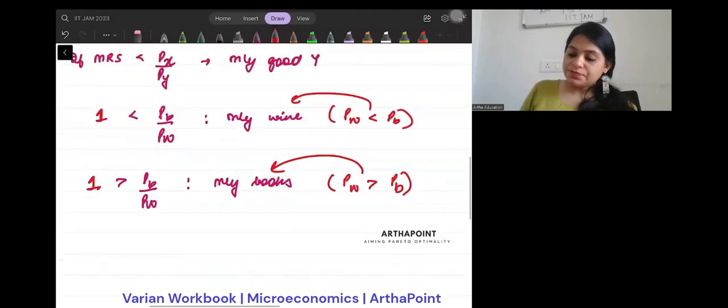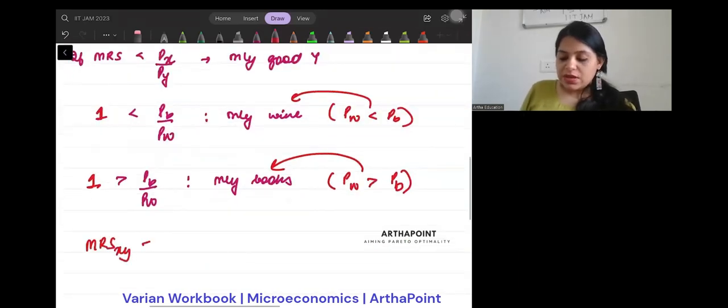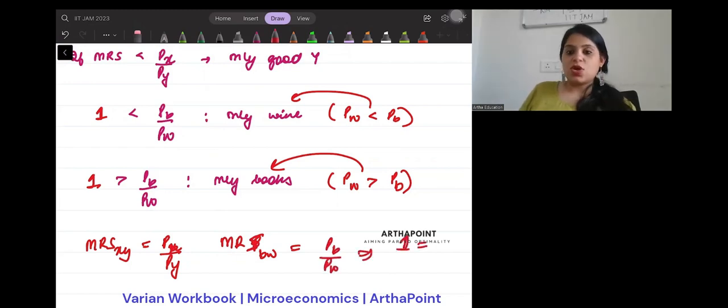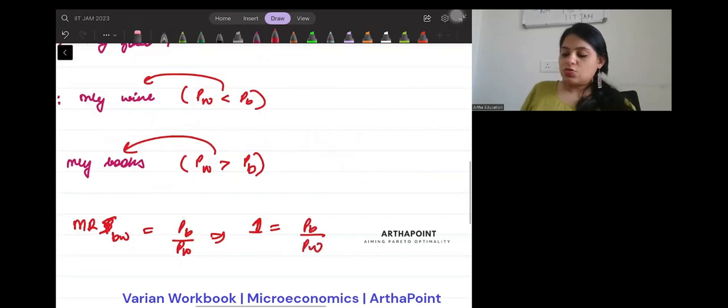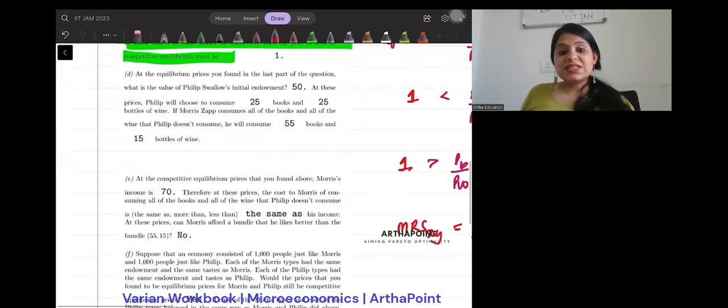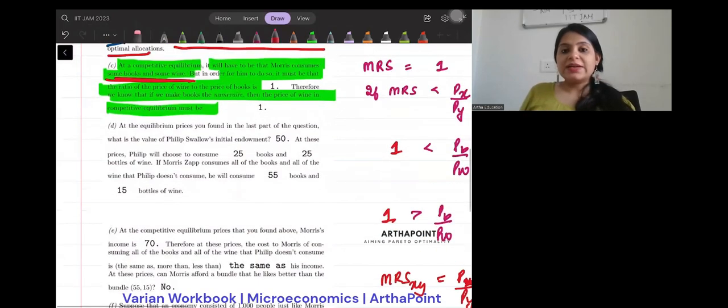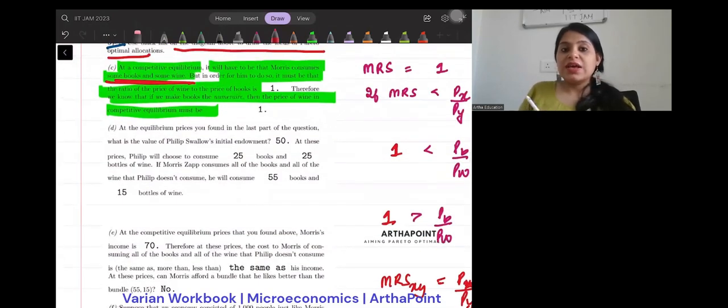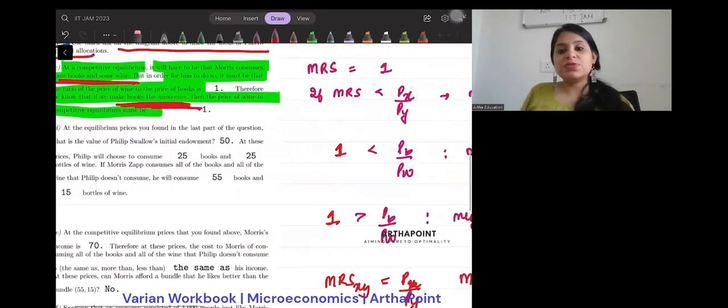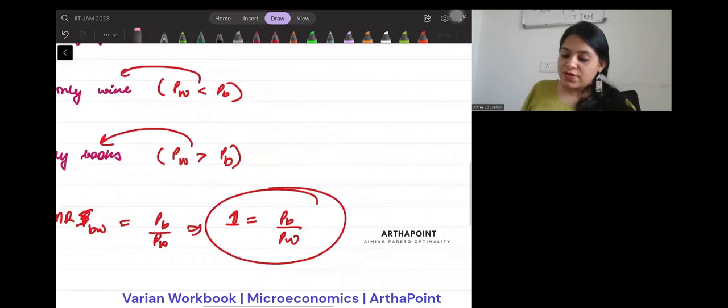That is possible only when MRS is equal to the price ratio PX by PY. In our case, MRS between BW should be equal to PB by PW. MRS is 1. So I want the ratio to be equal to 1. And then it says that look we want that the price of, so it says we want to make books numerate. Numerate means we are keeping the price of book as 1. So if I just keep the price of book as 1, what is the price of wine that I will get automatically? I will get that 1.